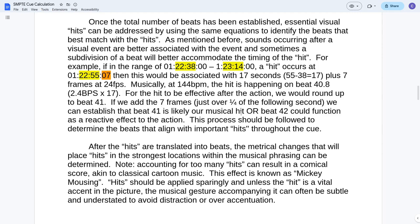Once the total number of beats has been established, essential visual hits can be addressed by using the same equations to identify the beats that best match with the hits. For example, if the range of one hour 22:38 to 23:14, a hit occurs at 22:55 and seven frames, then this would be associated with 17 seconds. We get there by taking 55 minus 38, which was the starting number. And that gets us a difference of 17. This is 17 seconds in plus seven frames at 24 frames per second.